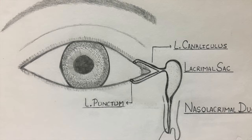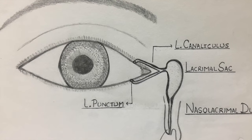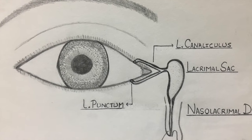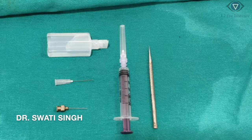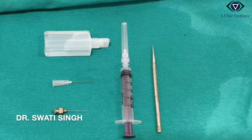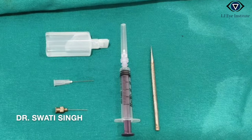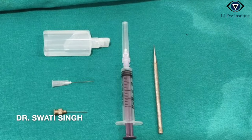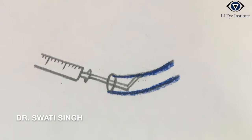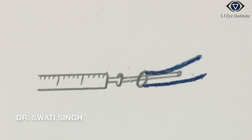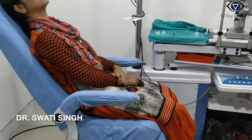Lacrimal syringing is an examination technique for evaluating the patency of the lacrimal drainage pathway. For the procedure, we need a 1 or 2 mL syringe with a 25 gauge lacrimal cannula. A curved cannula has more chances of injuring the canalicular mucosa compared to a straight one.